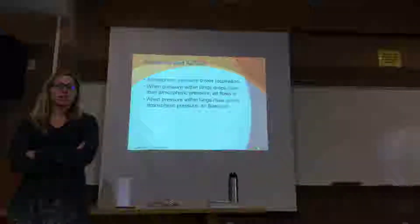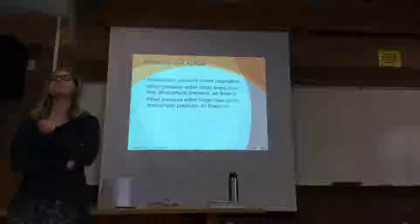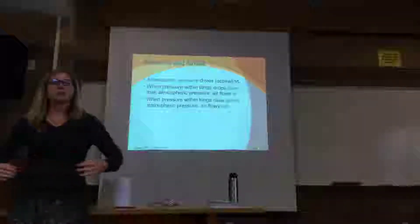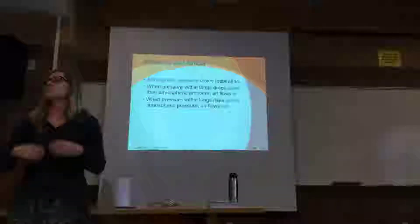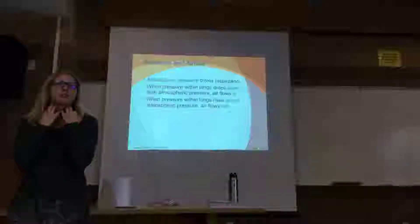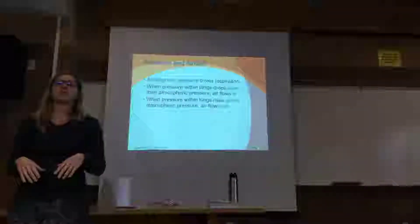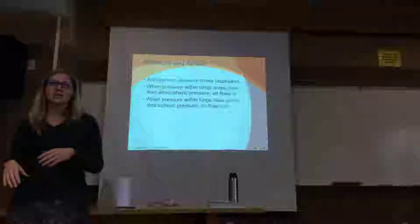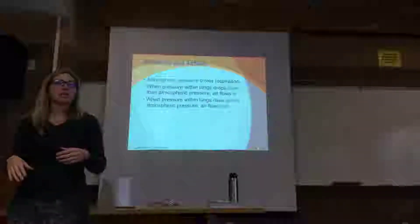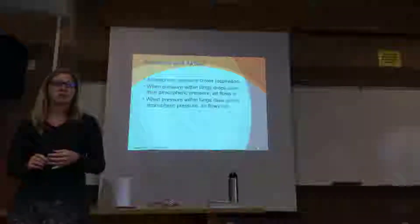In forceful inhalation, what additional accessory muscles do we engage? The obliques — well, that's for exhalation. For inhalation, we use our sternocleidomastoid, other neck muscles, and the pec minors that help expand that thoracic cavity. And then for forceful exhalation, like blowing out birthday candles, we engage our rectus abdominis and obliques.